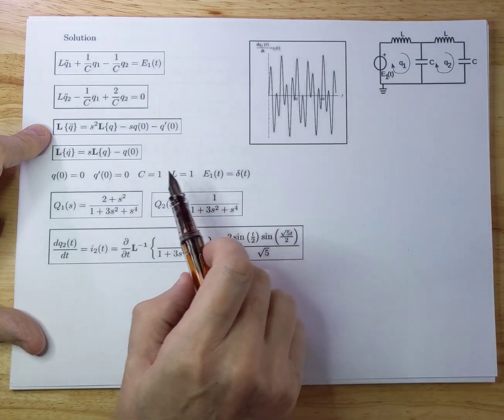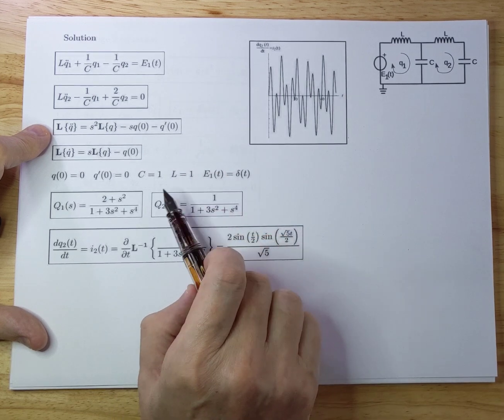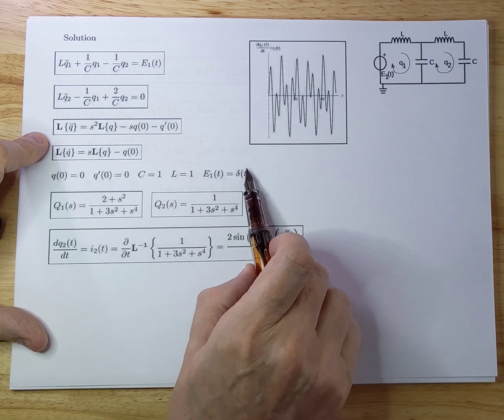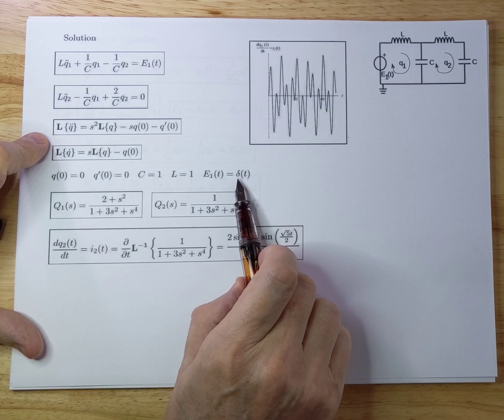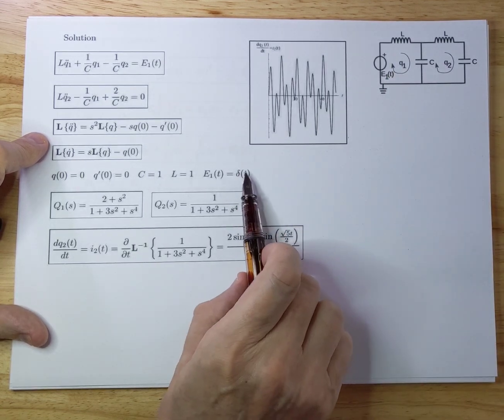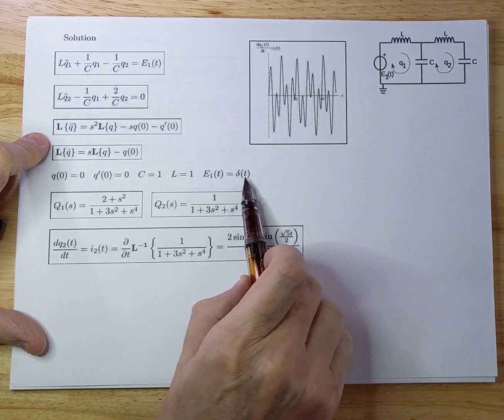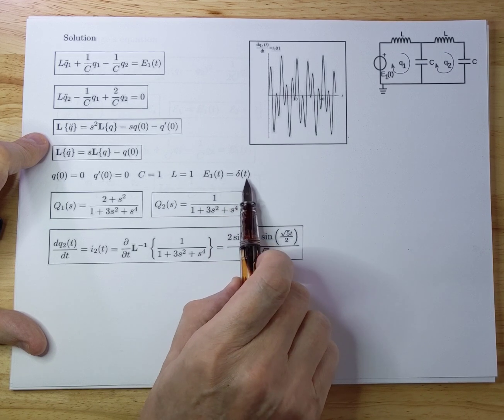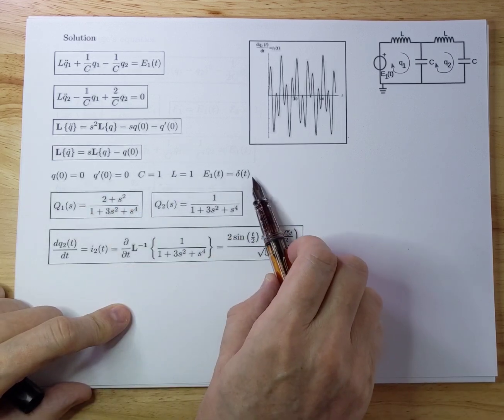I also assumed that C equals L equals one, so that we can actually see some shape of some function that comes out and we can analyze some of the behavior. And as a last one, I assumed that the electromotive force here is a Dirac delta function. And that's an impulse response. In electrotechnical engineering, that's very normal to calculate the impulse response on a function. And so we do that. And it's the most simple function because if you Laplace transform this, you will get one. So that makes it very easy.